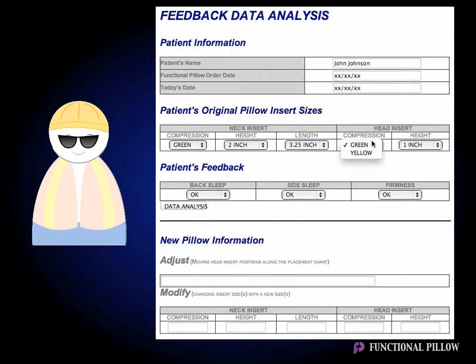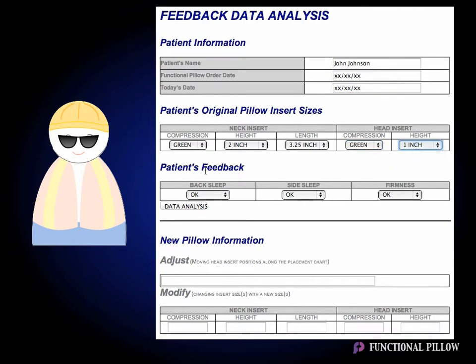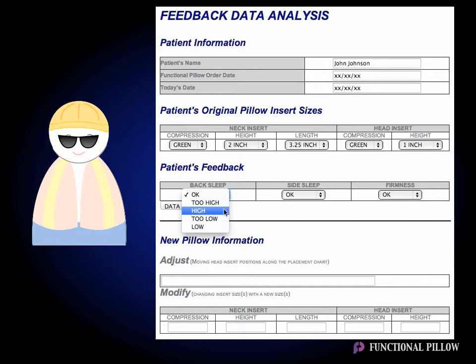His head insert compression was green, and the height was 1 inch. Now we'll enter John's feedback. We'll ask John how he felt when he slept on his back. The pillow might have felt okay, too high, high, too low, or low.